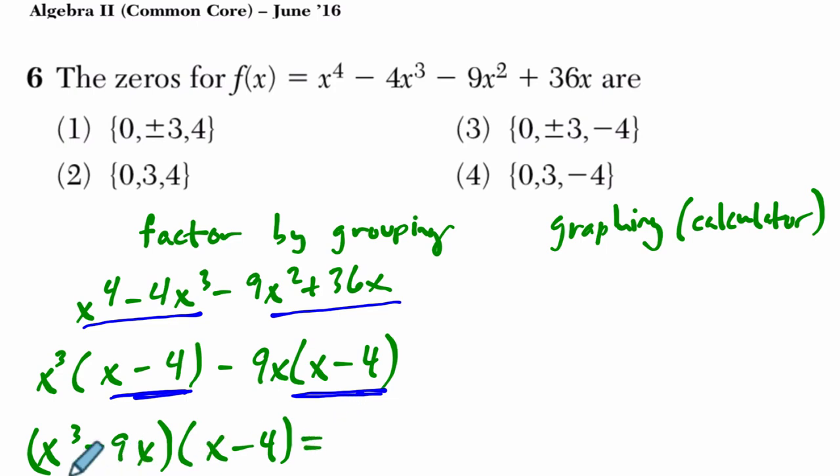And you can kind of see if I redistributed this x minus 4 to x cubed, I get this term, and x minus 4 times this term will get me this piece right here. Now, this can be factored further because I've got x as a common factor. So x times x squared minus 9 and times x minus 4, but there's more. What else do we have here? Difference of squares.